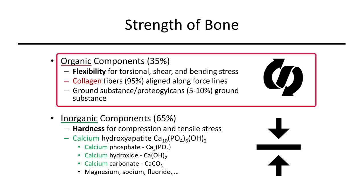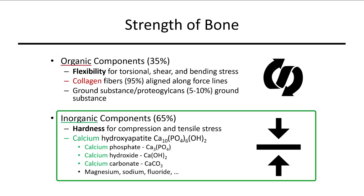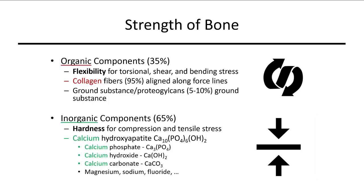The bone's ability to bend comes from the organic components, made up mainly of collagen fibers. The bone's ability to handle weight and pull along its axis is the inorganic component, which is mainly calcium hydroxyapatite — a compound that gives bone its strength and rigidity. Thus, the organic components allow bones to be flexible and withstand strain, while the inorganic components provide the hardness of bone to handle the weight.